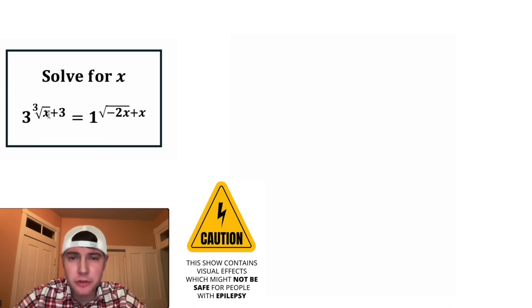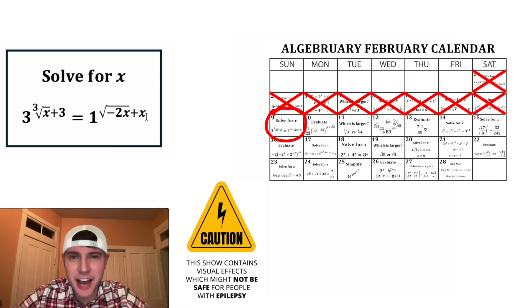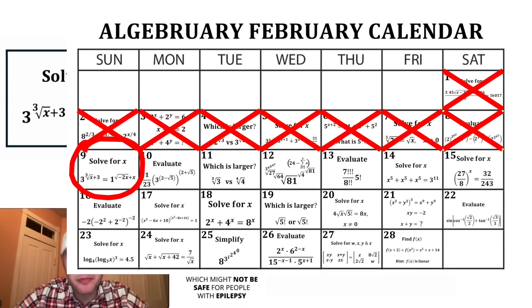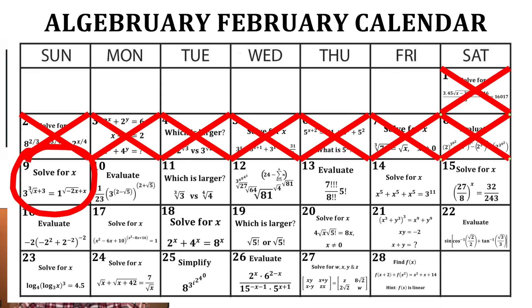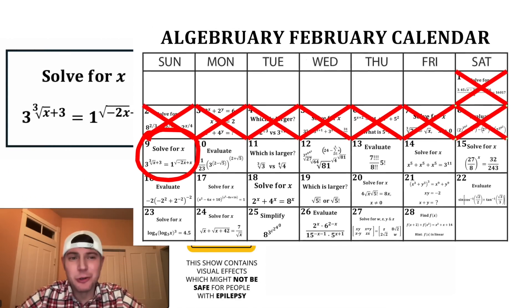We're given 3 to the power of the cube root of x plus 3 equals 1 to the power of the square root of negative 2x plus x. This is day 9 of our Algebra February calendar. For the month of February, we're gonna solve 28 Algebra problems. Looks like there's some pretty cool ones on here.